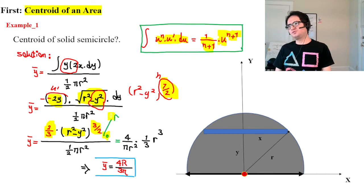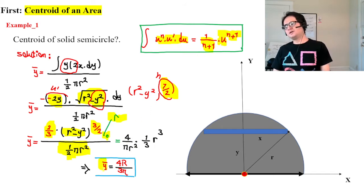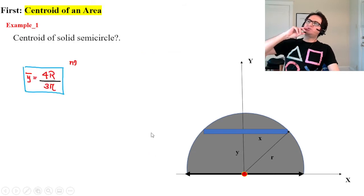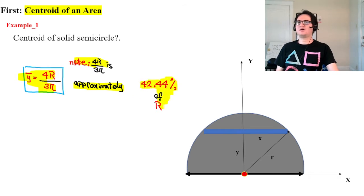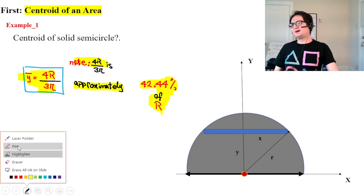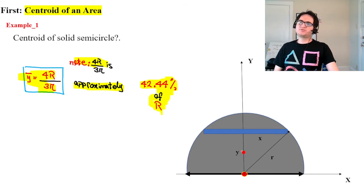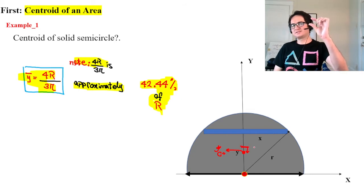Evaluating (r squared minus y squared) to the power of three-halves from 0 to r, divided by the area of the semicircle, gives y-bar equal to 4r over 3pi. This is approximately 42.44% of the whole radius.